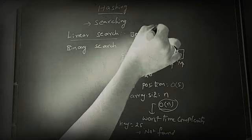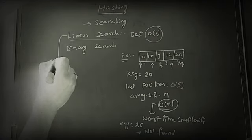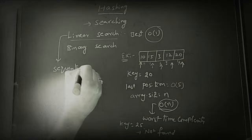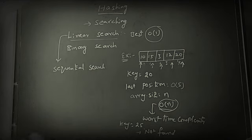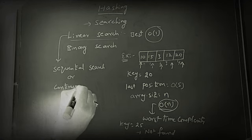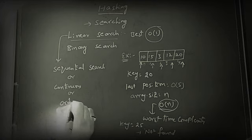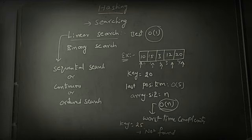The best time complexity of linear search is O(1). Linear search is also known as sequential search, continuous search, or ordered search — meaning you go one after another. These are the various names under sequential search.